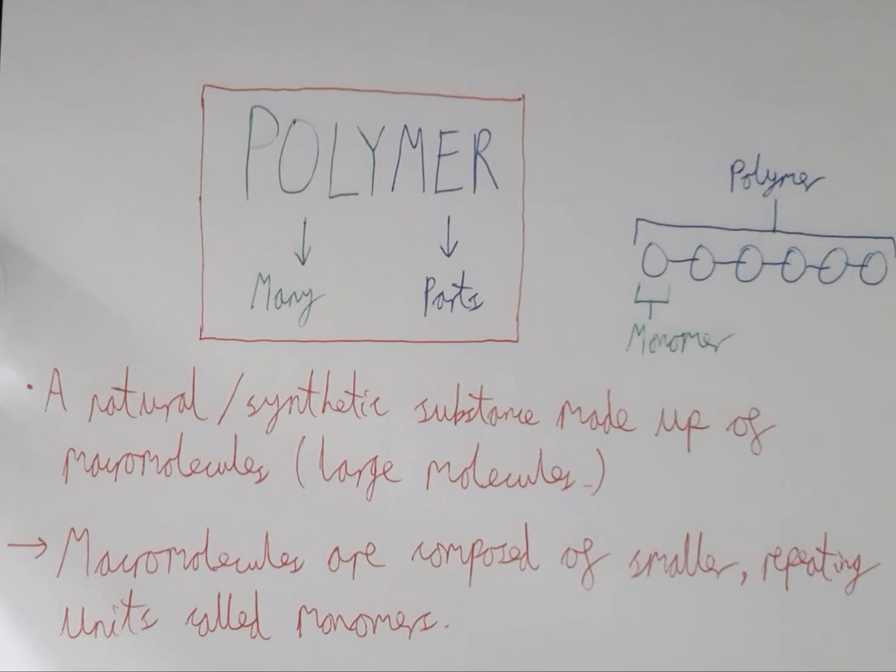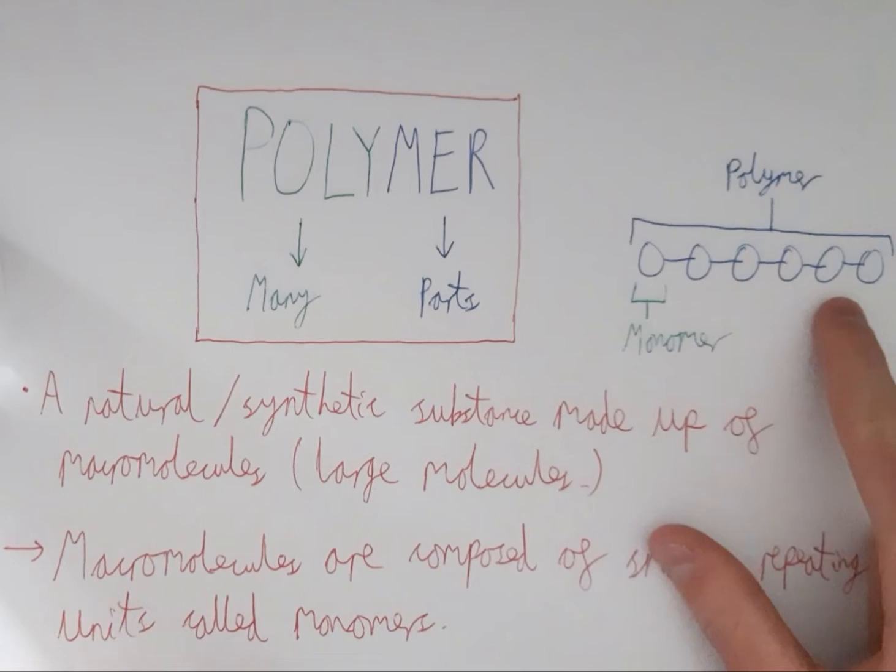These can be both natural, for example DNA, or synthetic, made by humans. These macromolecules are composed of smaller repeating units which we call monomers. Here we can see an example where these blobs represent the monomers and the whole chain represents the polymer.